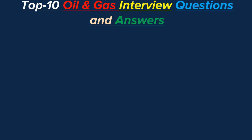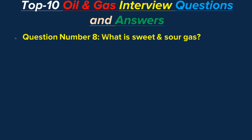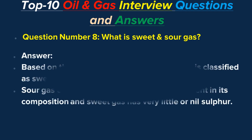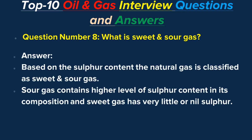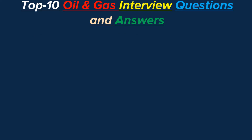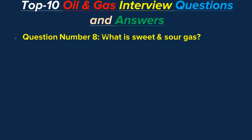Question number eight: What is sweet and sour gas? Answer: Based on the sulfur content, natural gas is classified as sweet or sour gas. Sour gas contains a higher level of sulfur content in its composition, while sweet gas has very little or no sulfur.